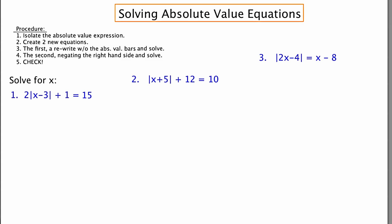Okay, let's take a look at the first one. The problem is 2|x-3| + 1 = 15. So to start, notice that the absolute value expression is not isolated, it's not by itself. So what we're going to want to do is peel away the extra things in order to get it by itself. And I'm going to start by subtracting 1. The next thing that I'm going to do is divide by 2.